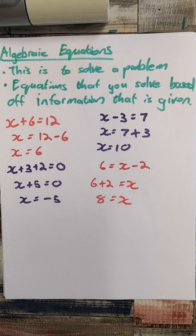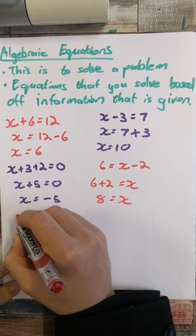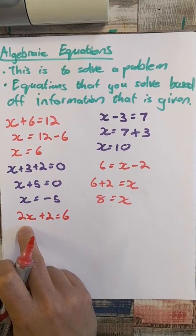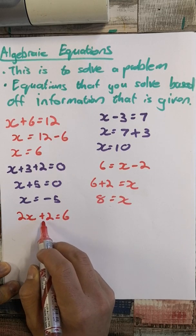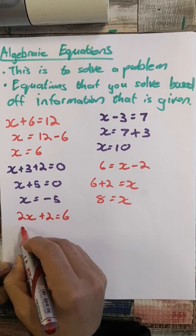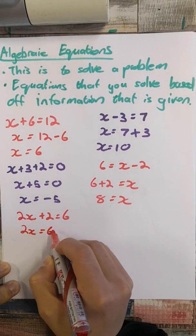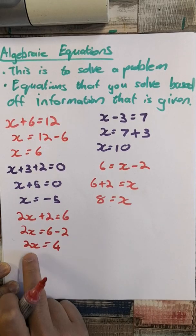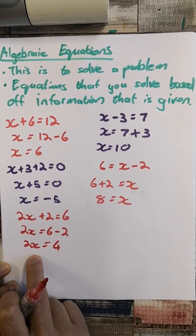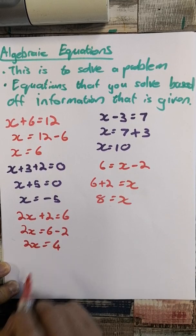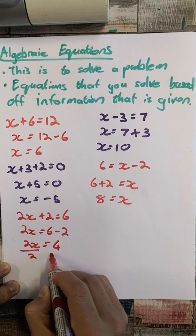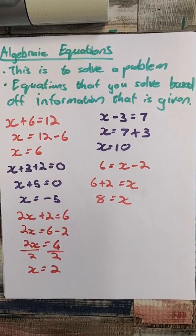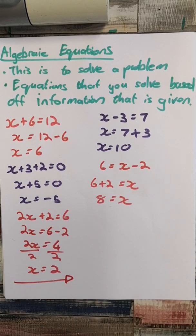This time I'm going to put a coefficient in front of our variable: 2x plus 2 equals 6. I'm left with just addition, no like terms, so I take the 2 over — it changes to negative 2. So 2x equals 4. Now I want to get x alone, so I divide by my coefficient, which is 2. Therefore x equals 2, because 4 divided by 2 is 2.